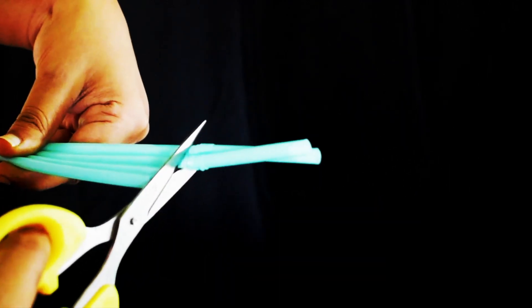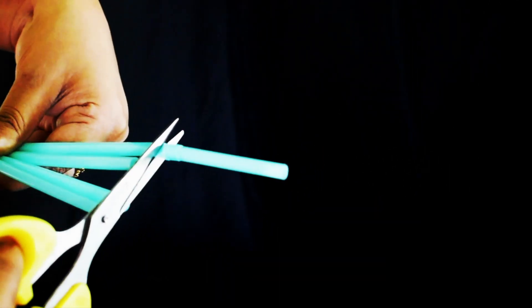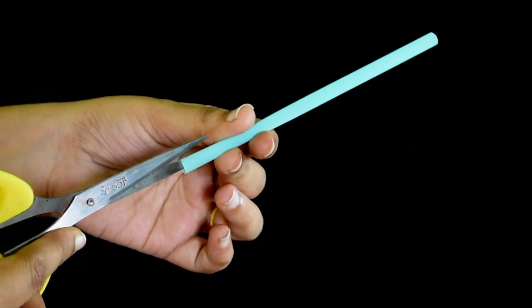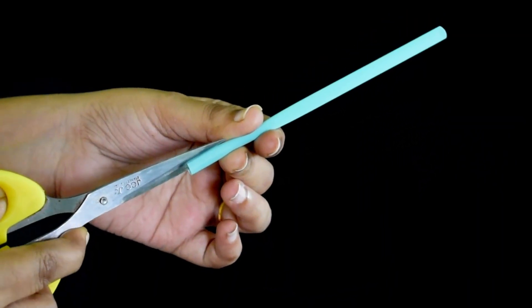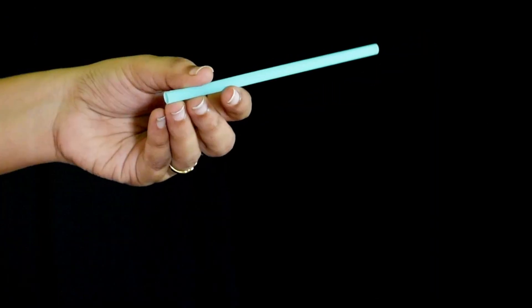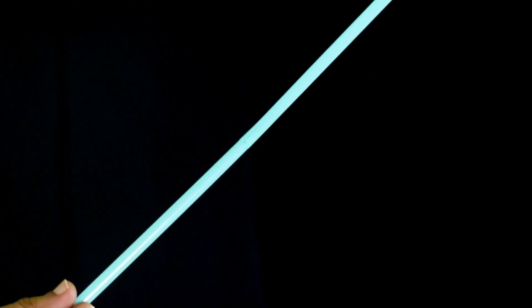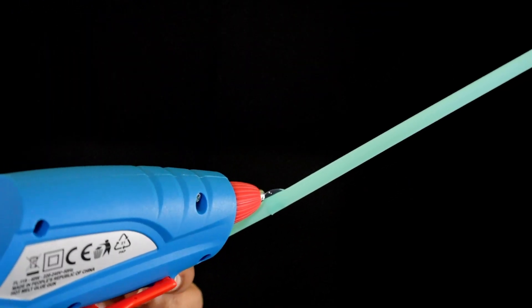Take straws and chop off the flexible bit on one end. We're going to lengthen the drinking straw by putting a slice in the end, sliding another straw inside, and sealing them together with a glue gun.